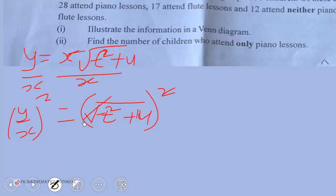Then we have y squared over x squared over here. It's equal to t squared plus u. Now, what do we do next? Good.